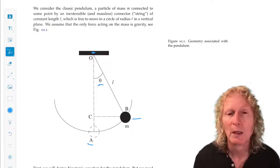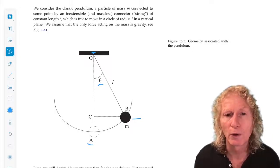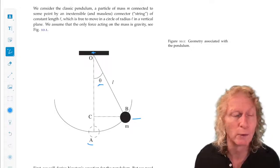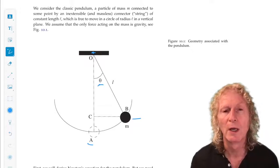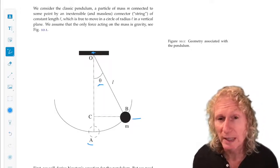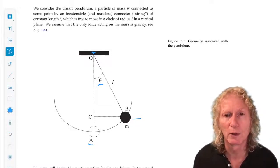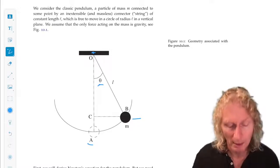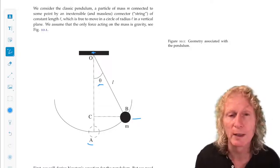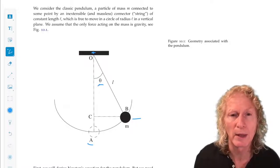Now since the only force acting on it is gravity, it's a conservative force, we have a potential energy function. So the potential energy would be the height above some reference position, and the reference position is going to be the mass hanging straight down, length L.